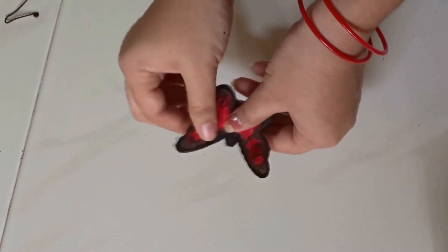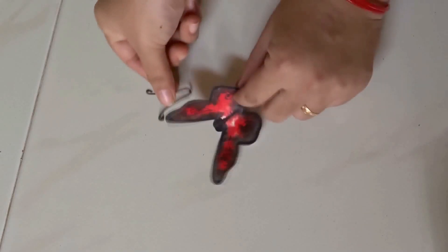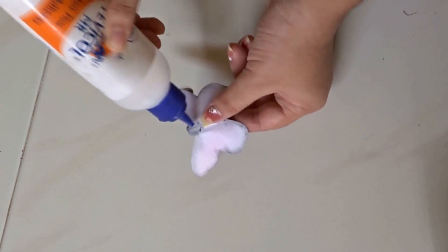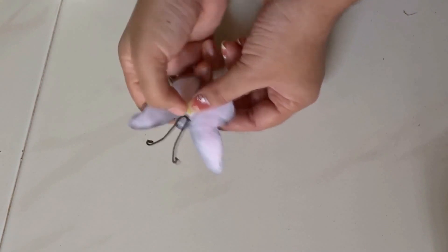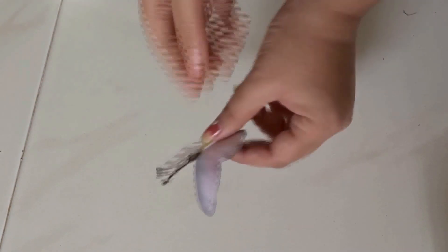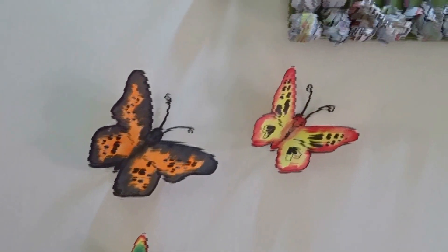Oh, I just forgot to mention the glue to fix the antenna to our butterfly. Then let it dry completely. Here you can see my other butterflies which I have arranged in this way, like they are moving towards the flower in the jungle theme frame.